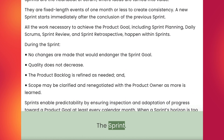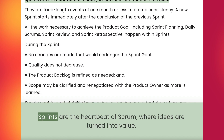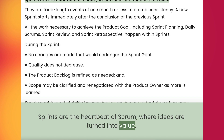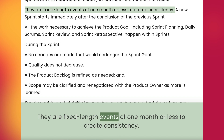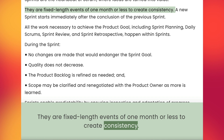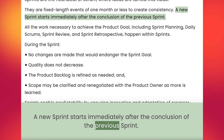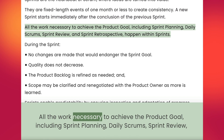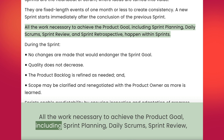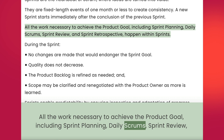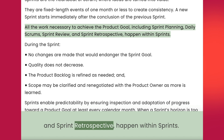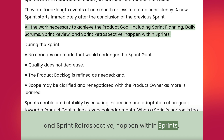The Sprint. Sprints are the heartbeat of Scrum where ideas are turned into value. They are fixed-length events of one month or less to create consistency. A new sprint starts immediately after the conclusion of the previous sprint. All the work necessary to achieve the product goal, including sprint planning, daily scrums, sprint review, and sprint retrospective, happen within sprints.